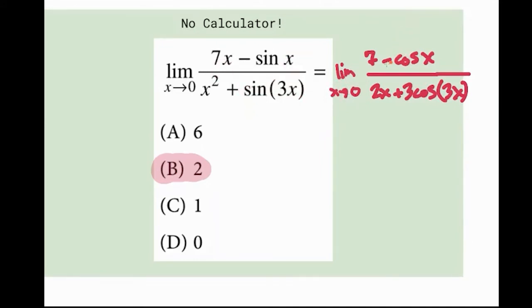From here, you can try plugging in zero. So if you plug in zero at the top, you're going to get 7 minus 1. So if you do direct substitution, the limit goes away. Plug in zero at the bottom, you get zero plus 3.